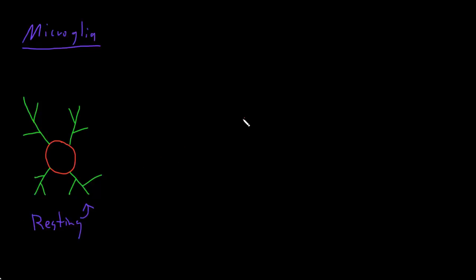Active microglia are larger and just kind of blob shaped. Some people say they're shaped like an amoeba. So when they're shaped like this, they're called active microglia.